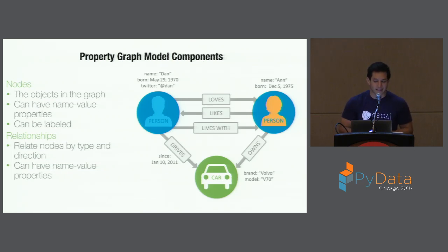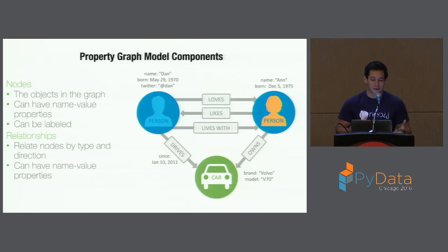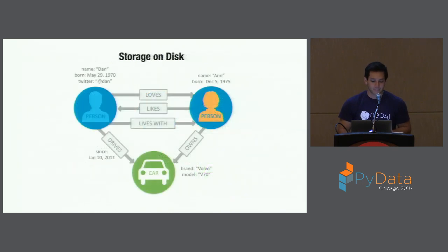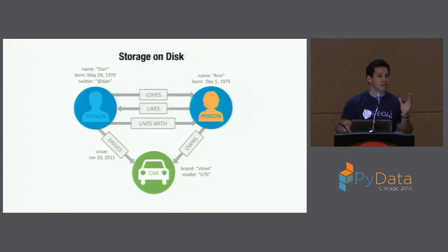Relationships can also be enriched with key-value pairs, like adverbs describing how things function. For example, we can see the story of Annie and Dan — directed relationships like 'Dan loves Annie, Annie only likes Dan,' Dan is living with Annie and borrowing her car. This is how Neo4j actually stores information on disk: a node store and an edge store. This allows operations through pointer arithmetic rather than index lookups, giving flat response time for large datasets.